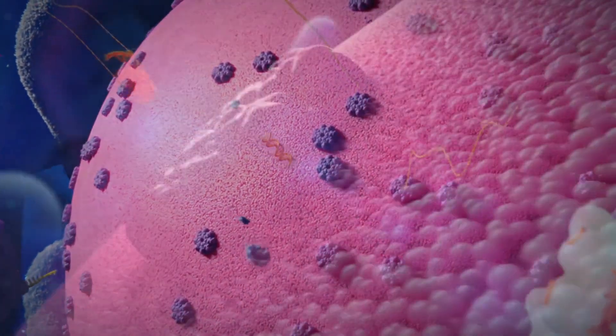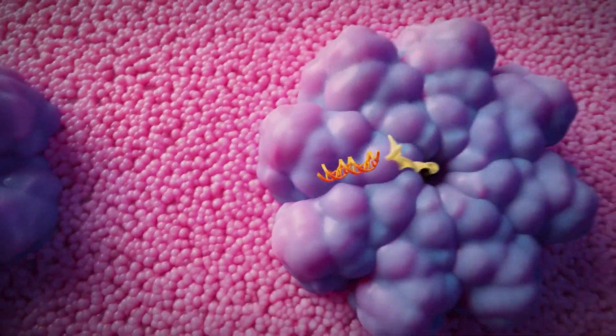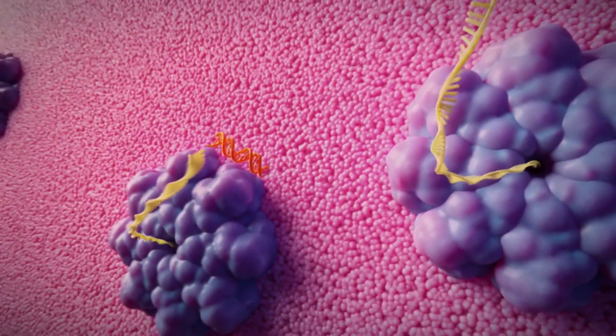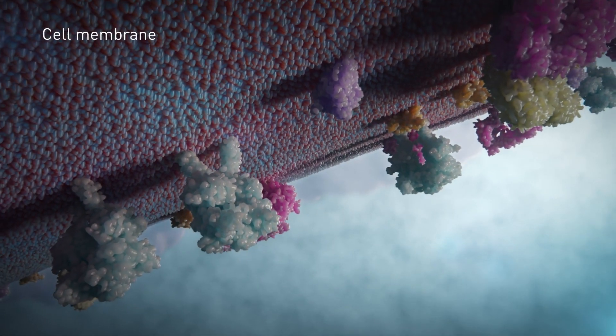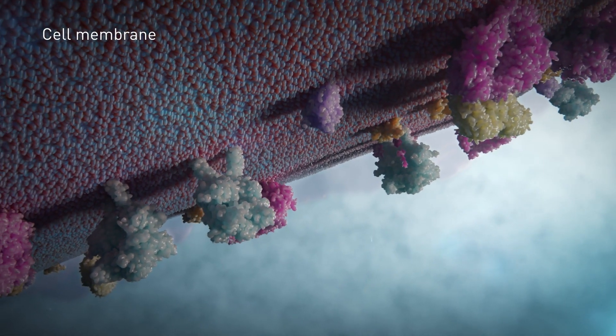Even further inside, the nuclear membrane functions like a moat around a castle, only allowing entrance under very specific conditions. Sometimes, a cell will even destroy itself to protect our DNA.